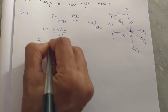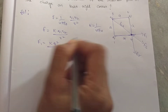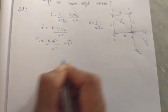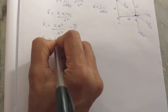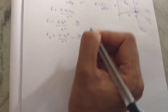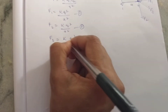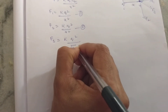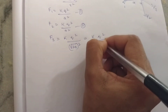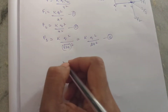F1 equals K times Q1 (which is Q) times Q2 (also Q), so K Q squared divided by R squared, where R is A — so K Q squared over A squared. This is equation 1. F2 also gives the same: K Q squared over A squared — equation 2. F3: K is the same, charges are the same, but distance changes to root 2A whole squared, which is 2A squared. So F3 equals K Q squared over 2A squared — equation 3.